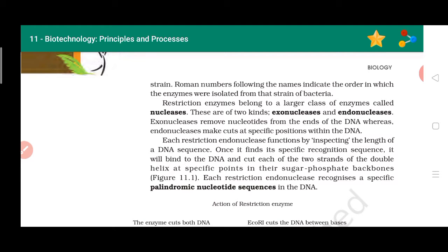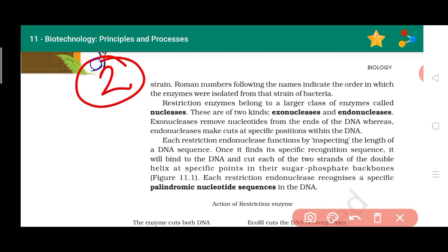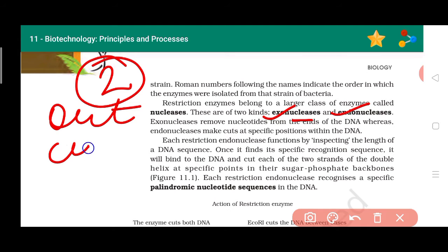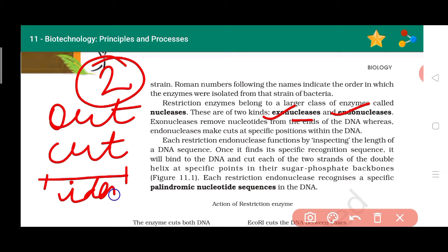We were discussing restriction enzymes. The word endonuclease I keep using — but restriction enzymes are basically of two types: one is exonuclease and another is endonuclease. 'Exo' means outside, so exonuclease cuts DNA from the outside. Endonuclease works from the inside — it identifies the specific six base pairs it needs and cuts only those.